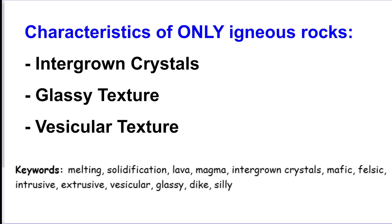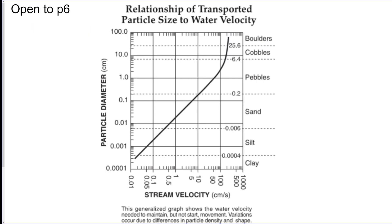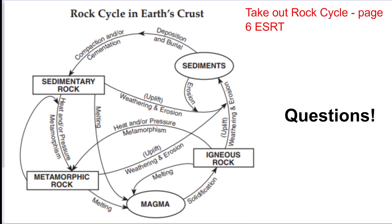You should know how to read the particle size to water velocity chart — it's covered in the other videos. For the rock cycle chart, just follow the arrows; each arrow points to the process that creates the rock it's pointing to. For example, starting from sedimentary rock, if you apply heat and pressure, it makes metamorphic rock.